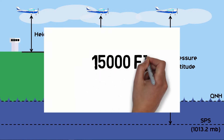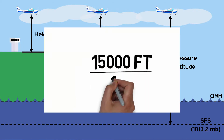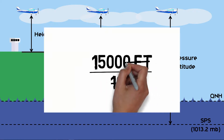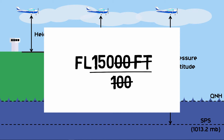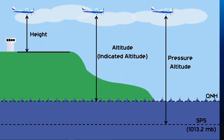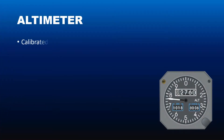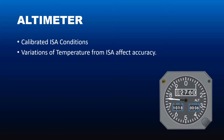For instance, 15,000 feet equals flight level 150. The altimeter is calibrated to ICAO standard atmosphere ISA conditions. Variation of temperature from ISA value causes inaccuracies on the altimeter.